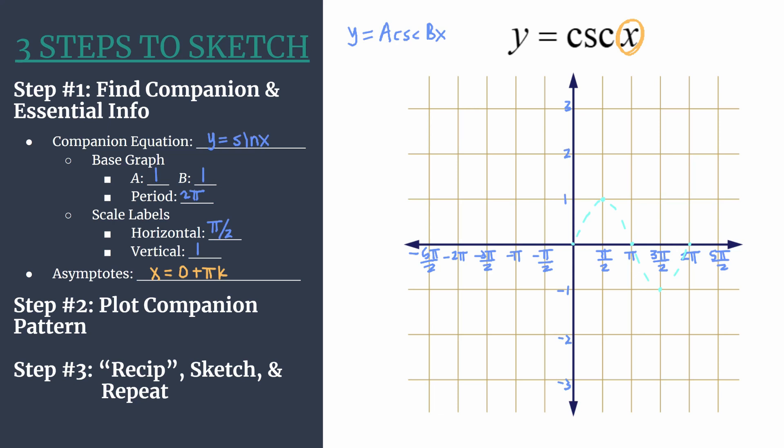We have a great companion pattern graph. We're ready for step three, where we reciproc, sketch, and repeat. We're going to take the reciprocals of some values along the way. Starting at the origin, trying to take the reciprocal of zero doesn't work, and we talked about we should see an asymptote at x equals zero. So there's an asymptote here on the y-axis. Let's take a couple reciprocals as we start moving to the right. The reciprocal of one half is two. The reciprocal of one is one. Another reciprocal of one half is two. That's where we're going to create the first part of our cosecant curve.